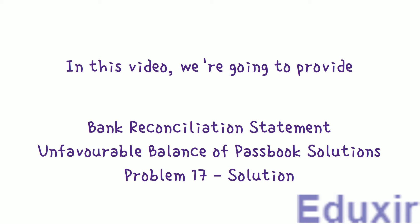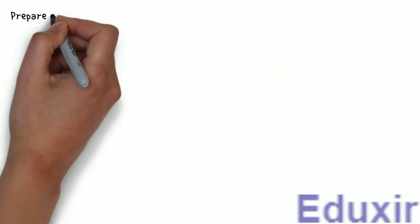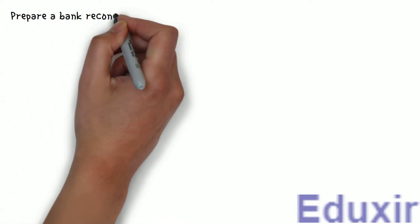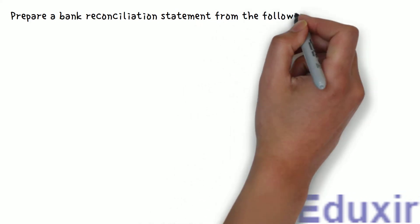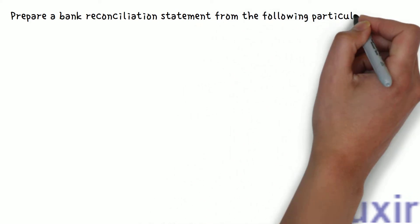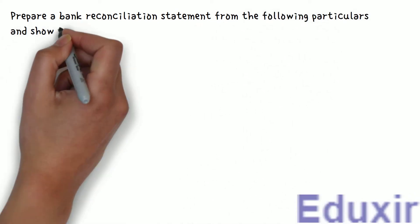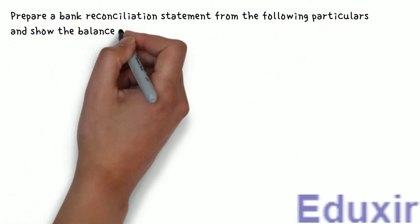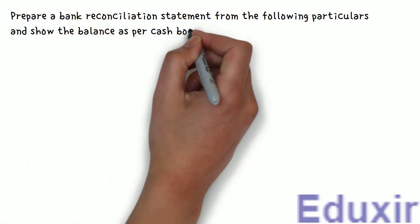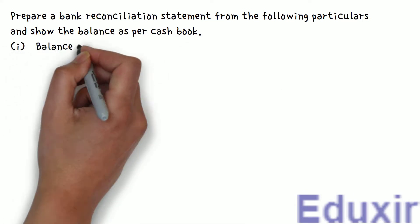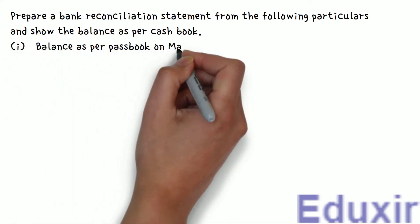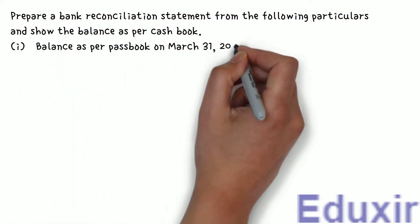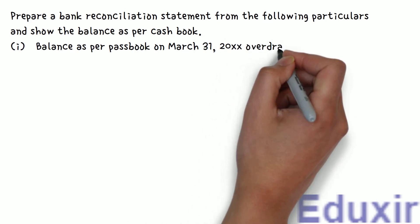The problem statement is as follows: Prepare a Bank Reconciliation Statement from the following particulars and show the balance as per cashbook. 1. Balance as per passbook on March 31st, 2017, overdrawn ₹20,000.